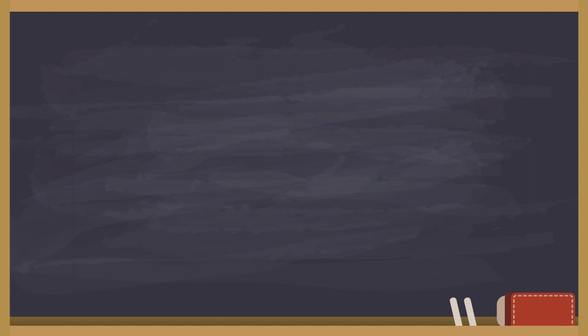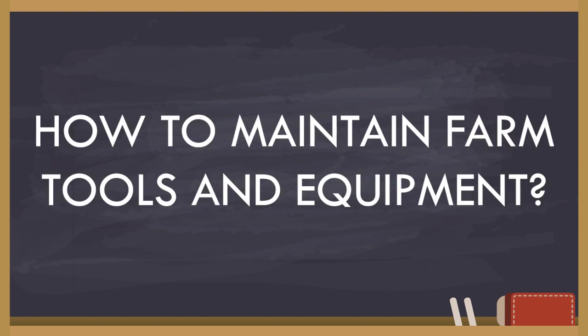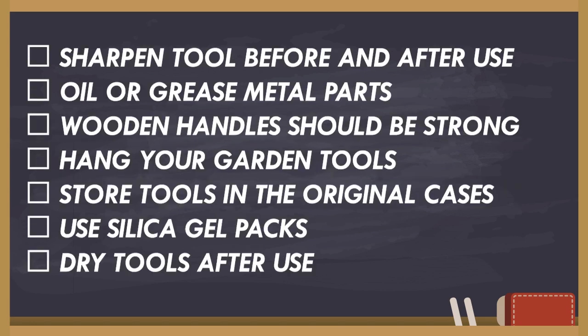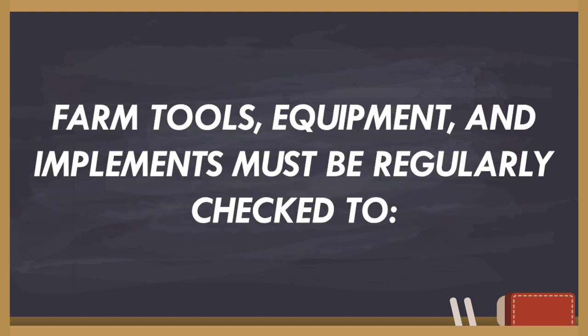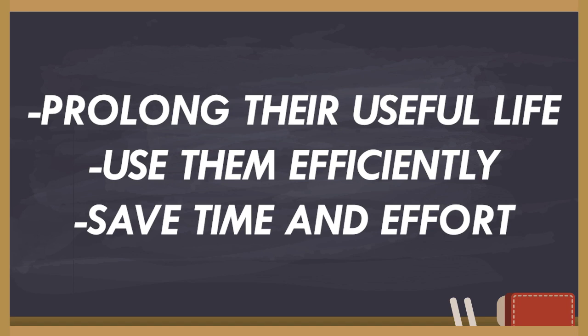Here's how to maintain farm tools and equipment simply: sharpen tools before and after use, oil or grease metal parts, make sure wooden handles are strong, hang your garden tools, store tools in their original cases, use silica gel packs, and dry tools after use. Farm tools, equipment, and implements must be regularly checked to prolong their useful life. Use them efficiently to save time and effort.